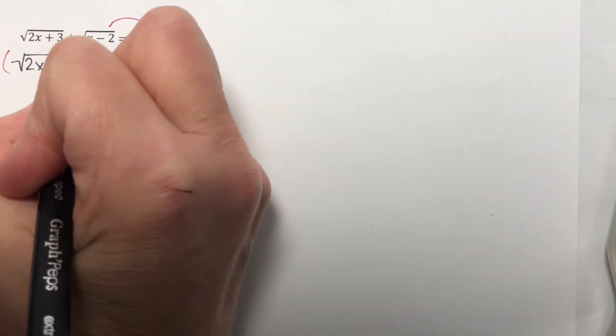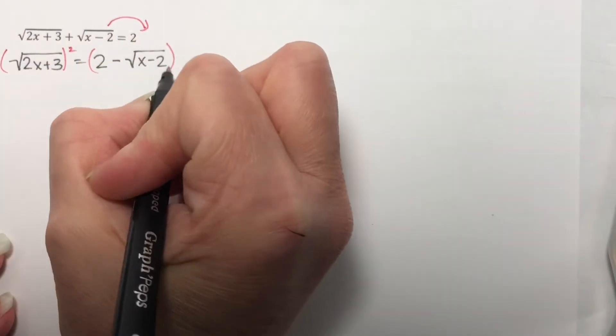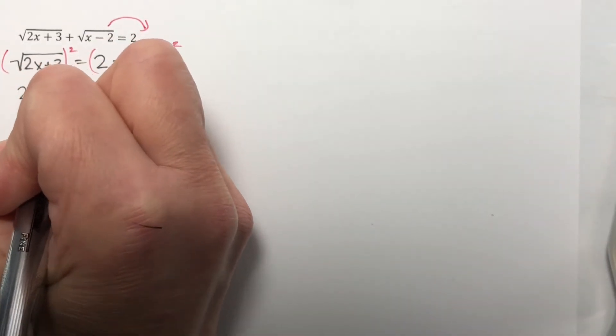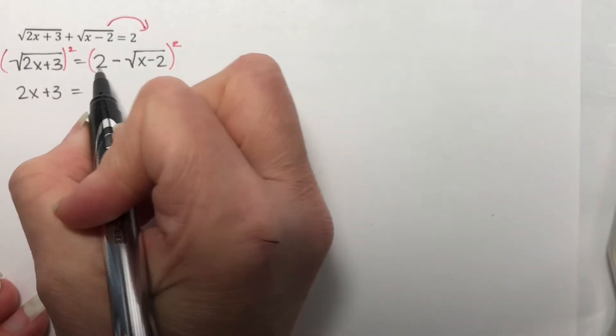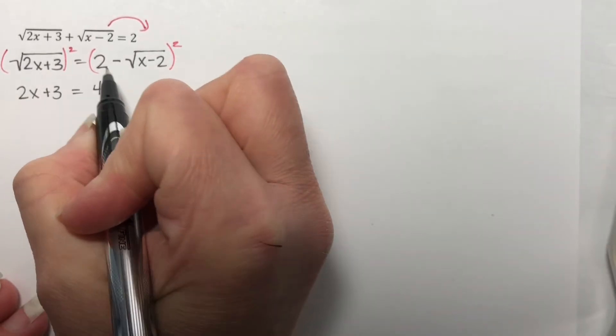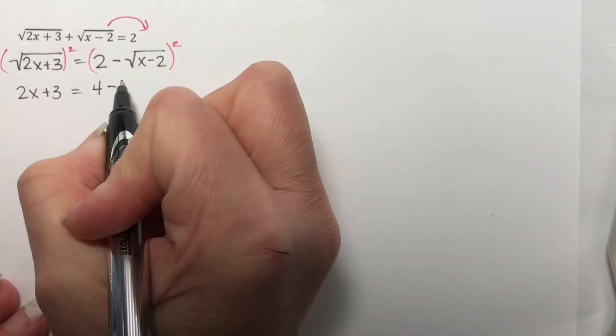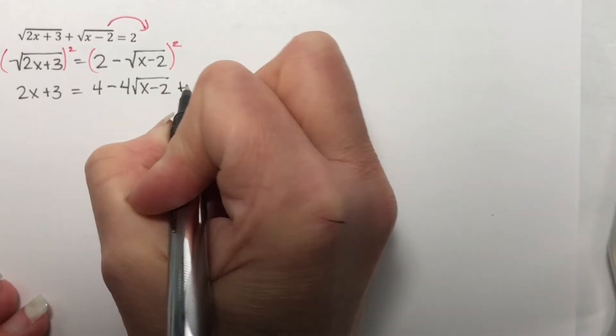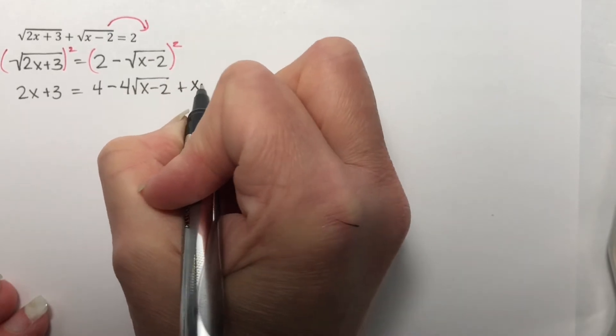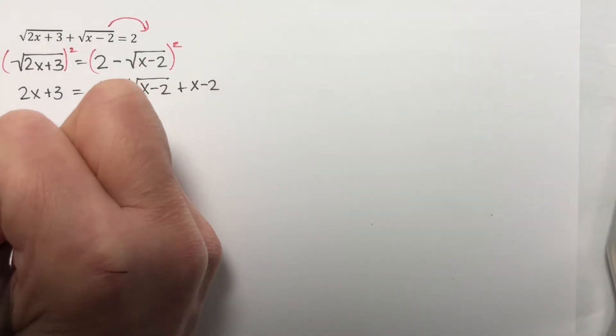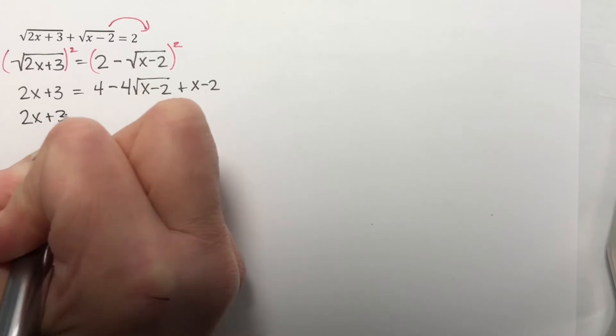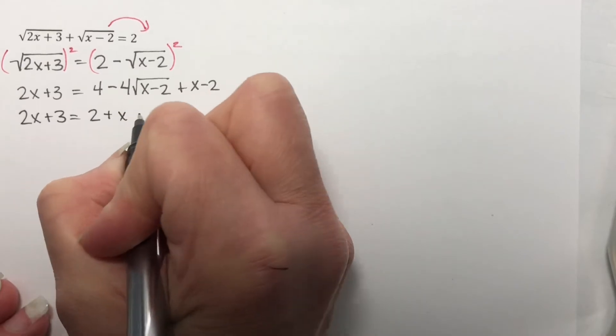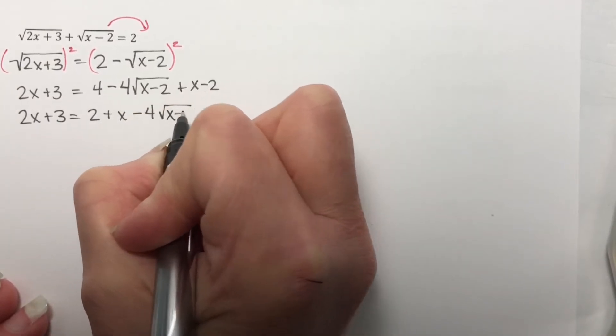Square both sides. So I get 2x plus 3 is equal to 4 minus... Multiply these together and then double it, so I get minus 4 times the square root of x minus 2, plus, squaring what's under here, I get x minus 2. So I have 2x plus 3 is equal to 4 minus 2 is 2, I have the plus x minus 4 times the square root of x minus 2.